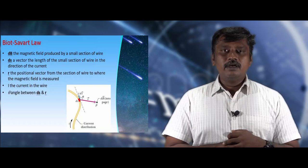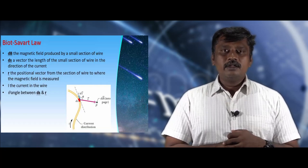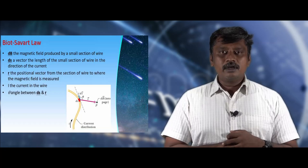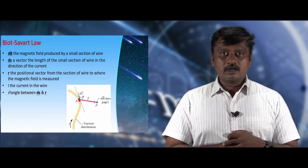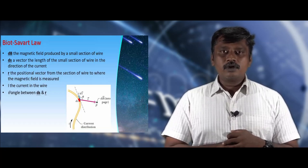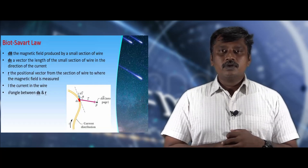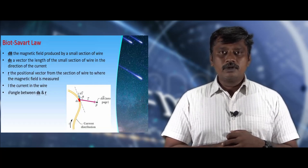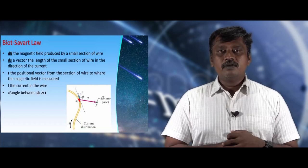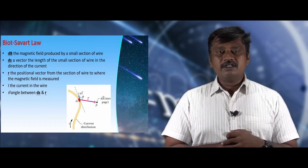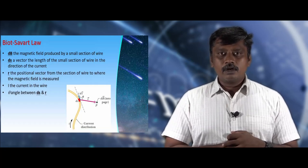If we consider a point near to that wire, the distance of the point from the current element is r. Therefore, dB is the magnetic induction due to that current element. This dB will be proportional to various parameters — let us see them one by one.